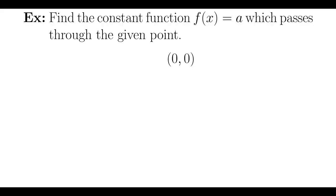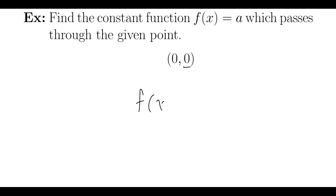Let's find the constant function of the form f(x) = a, which passes through the point (0, 0). Remember, a constant function has the same y value no matter what x value is plugged in. The given y value is 0, so my constant function is f(x) = 0.